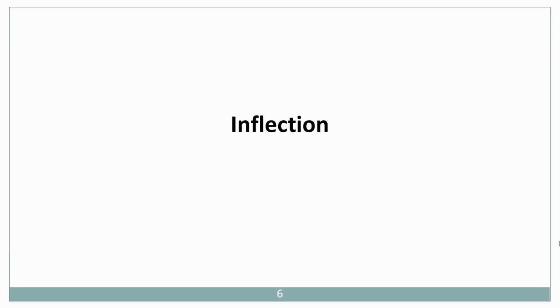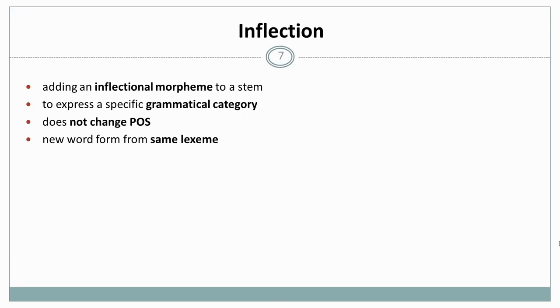Now, let's get to inflection. Inflection describes the process of adding an inflectional morpheme—so as I said, a bound morpheme, an affix—to a stem. And this is done to express some grammatical category. So for example, tense, number, person, gender, and so on, depending on the language.